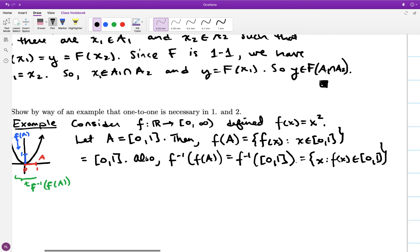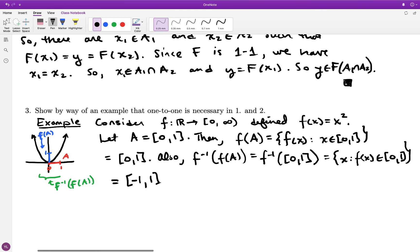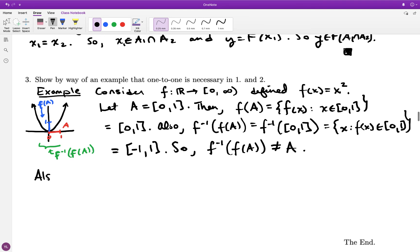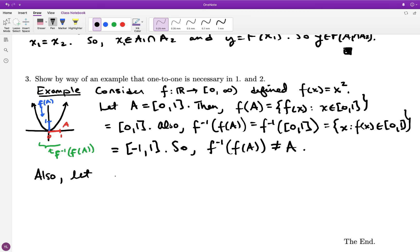So the fact that f was not one to one allowed us to find a subset of the domain A such that f inverse of f(A) was not equal to A. And it's the same thing with the second property. I can find two subsets of the domain A1 and A2 that on one hand, f of their intersection is something, and f of the first one intersects f of the second one is not that same thing. So I'm just choosing A1 and A2 to be disjoint so that their intersection is empty, and hence the image of their intersection is also empty.